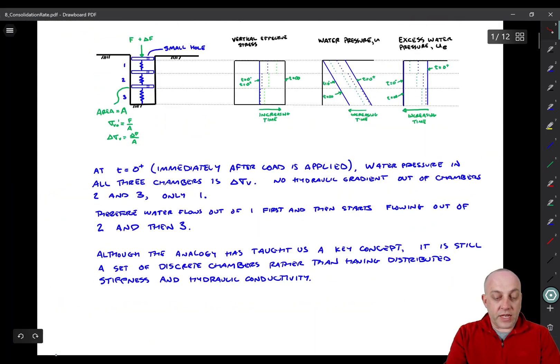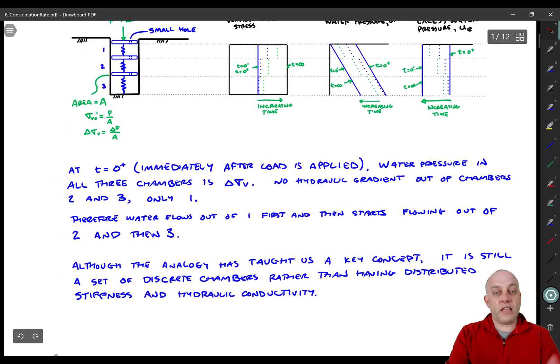Okay, so I've written some text here that describes this idea. The key thing to remember is that dissipation of pressure happens fastest up at the very top, which we'll call the drainage boundary. That's where the water has to get out and leave the cylinder. And that is something that is true of soil, as we'll see when we go to Terzaghi's one-dimensional consolidation equation. So now, although this analogy has taught us a key concept, this still is not really continuous, right? We saw three little chambers that are discrete, and we'd like to make this more of a continuous equation, which will come in the next video.